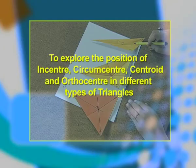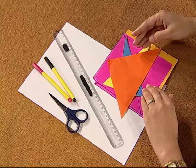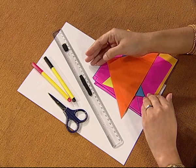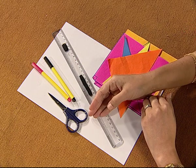Dear students, in Geometry, we study about various shapes. In triangles, we study about terms like incenter, circumcenter, centroid and orthocenter. Today, we are going to explore the position of incenter, circumcenter, centroid and orthocenter in different types of triangles. For doing this activity, we require the following materials: some colored papers, a ruler, sketch pens and a pair of scissors.